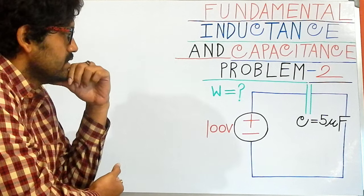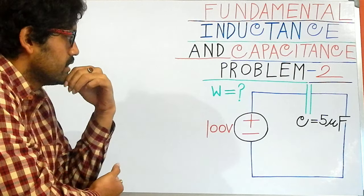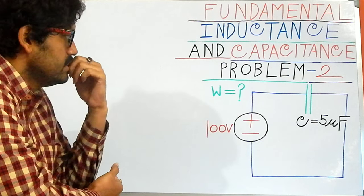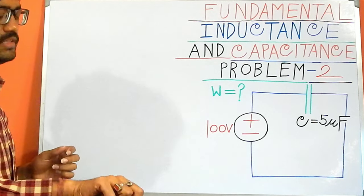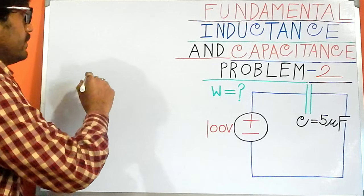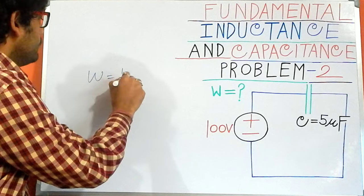The value of the capacitor or the capacitance is 5 microfarads, and our ultimate objective is to find out the energy across this capacitor. So what is the formula? We apply the proper formulation, which is half CV squared.